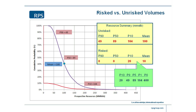The P90 is 49 million barrels, the P50 is 89, the P10 is 164. When we're dealing with prospective resources, we still call them either by the confidence levels or as low, best, and high estimates, and I've just quoted the mean.